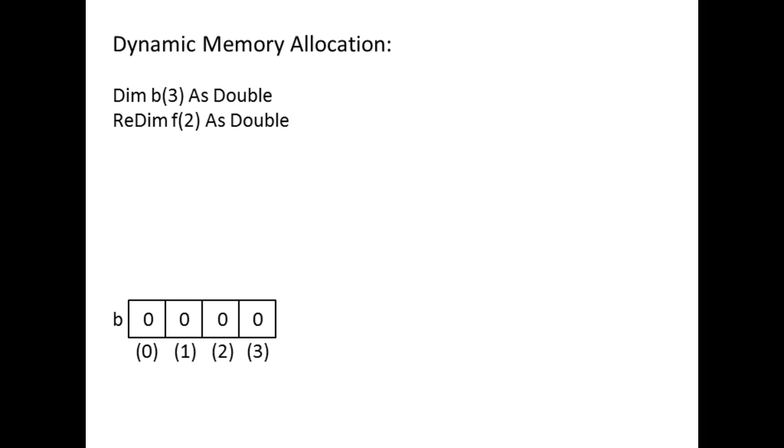Redim f(2) as double creates an array that initially contains three elements. Let's assign three values to these elements.